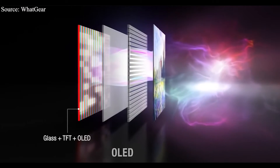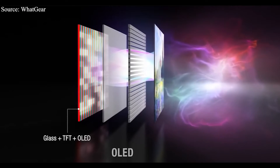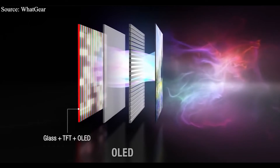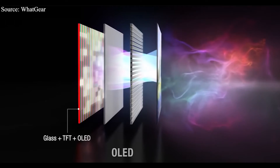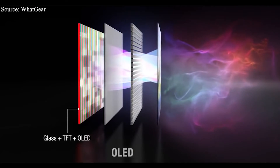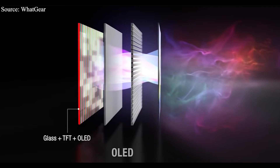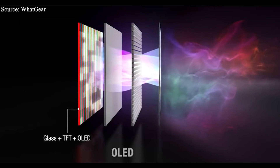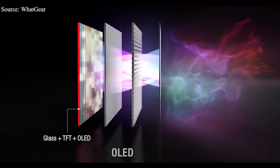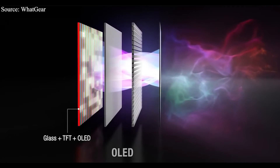When an electric pulse is applied on the two conducting sheets, light is directly produced from the organic material sandwiched between them. OLEDs are much better compared to LCDs because of exceptional color reproduction and an extremely lightweight design.